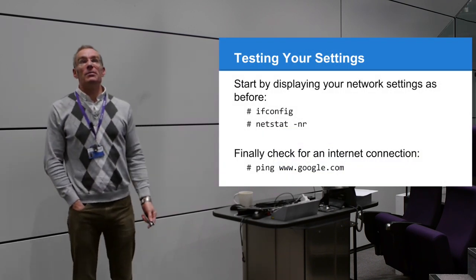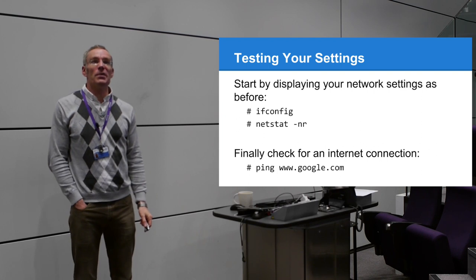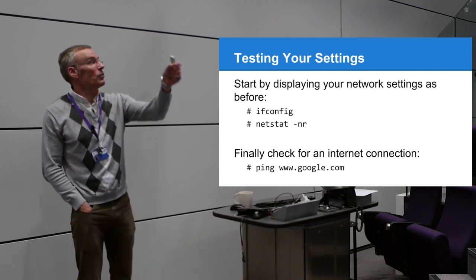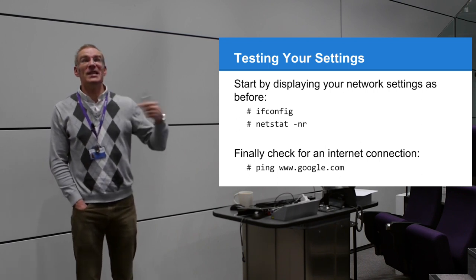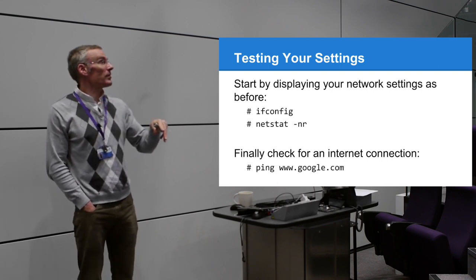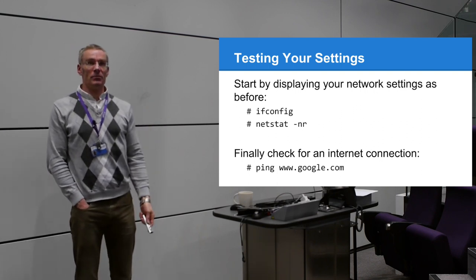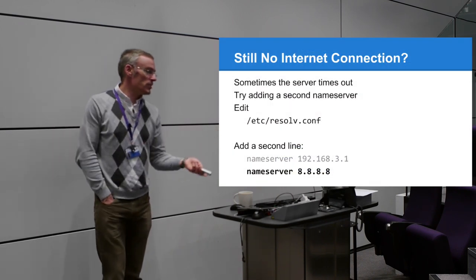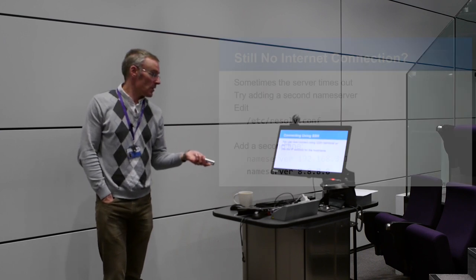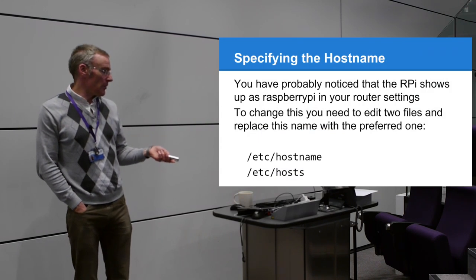Run `ifconfig` again to confirm it picked up the right IP address and settings. Then ping Google: `ping google.com` - it sends a little packet to Google and expects a response in milliseconds. If you're getting responses, it's working. Press Ctrl+C to cancel - Ctrl+C always means cancel in Linux. Congratulations, you have a device on the internet.